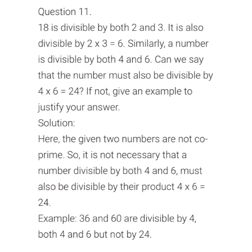Question number 11: 18 is divisible by both 2 and 3, and also by 2 × 3 = 6. Similarly, if a number is divisible by both 4 and 6, can we say it must also be divisible by 4 × 6 = 24? The answer is no, because 4 and 6 are not co-prime numbers. The rule applies only when the two numbers are co-prime. For example, 36 and 60 are divisible by both 4 and 6, but not by 24.